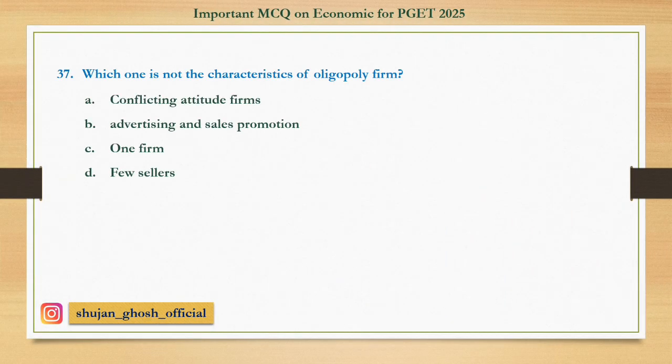Question number thirty-seven: Which one is NOT a characteristic of an oligopoly firm? Option A: conflicting attitudes of firms; B: advertising and sales promotion; C: one firm; D: few sellers. Answer: one firm.